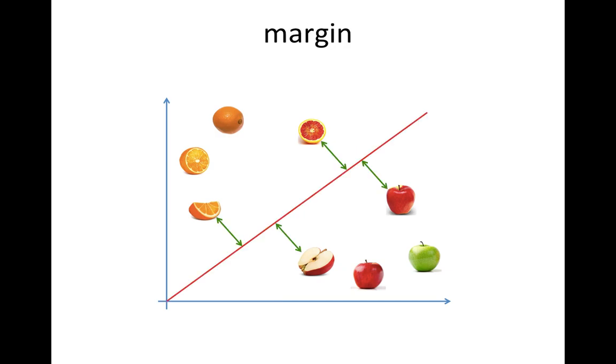We call the distance between the decision boundary and the nearest data as margin. Normally, bigger margin gives you better prediction on unseen data, just like our previous example.